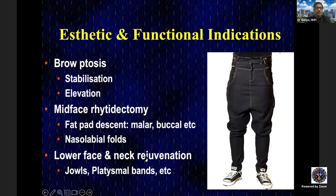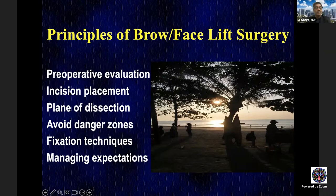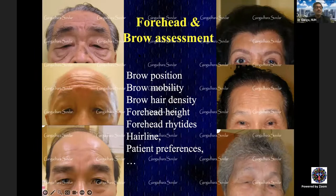Patient assessment must include both physical and emotional components — understanding expectations and motivation. When examining a patient, the surgeon mentally plans incision hiding, planes of dissection, avoiding danger zones, fixation methods, and expectation management. Examples of patients requiring upper facial rejuvenation include: a gentleman using frontalis muscle with heavy forehead creasing, a patient with a fully receded hairline with thick mid-forehead furrows where no incision can be hidden, and women with dense hairlines enabling better incision concealment.